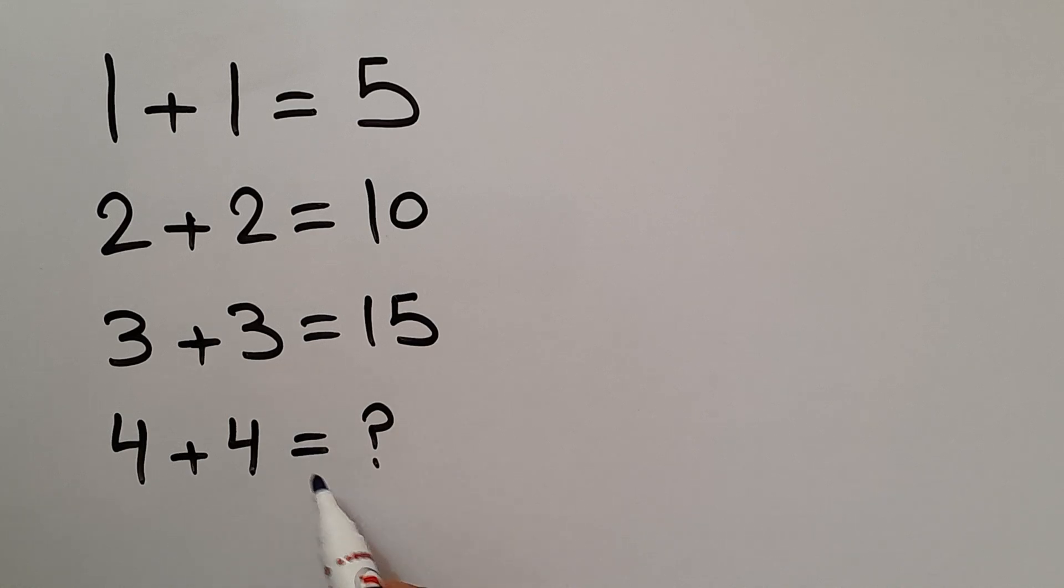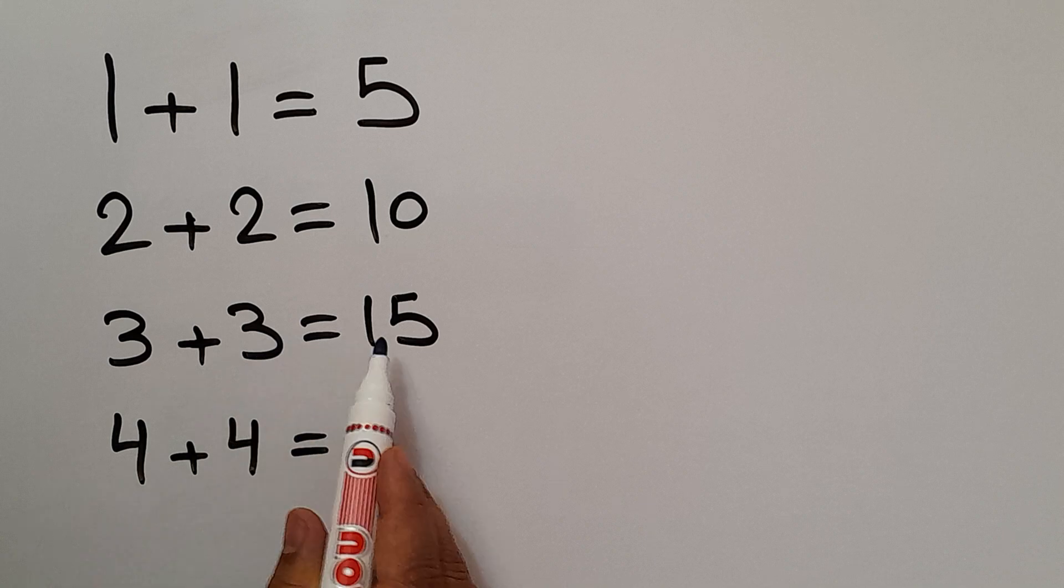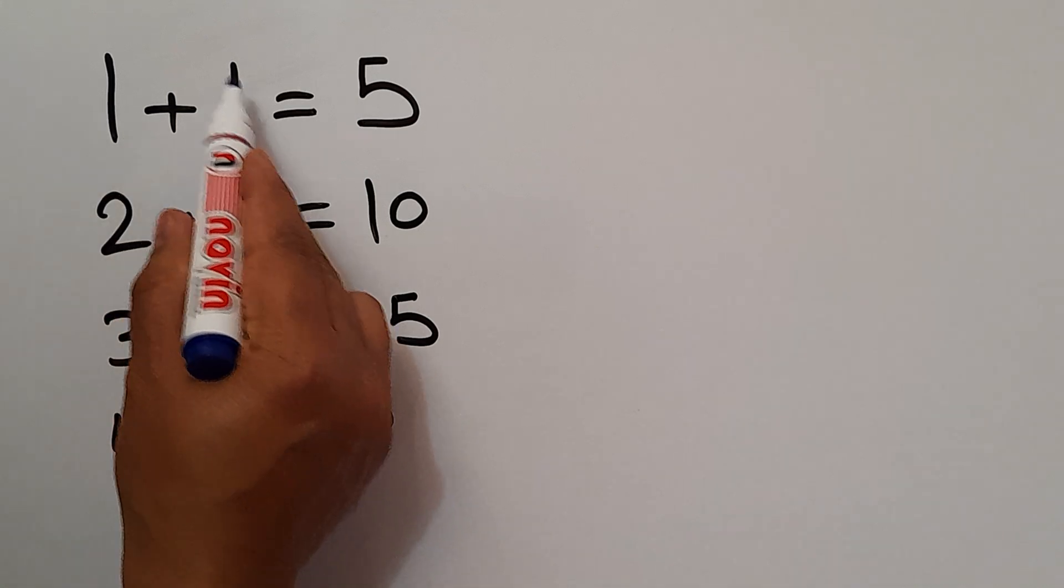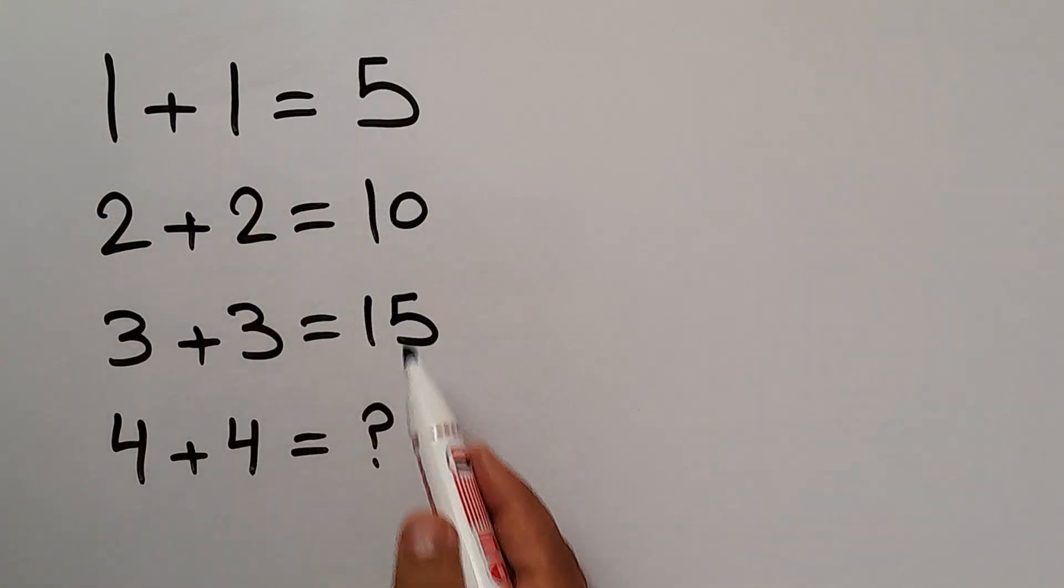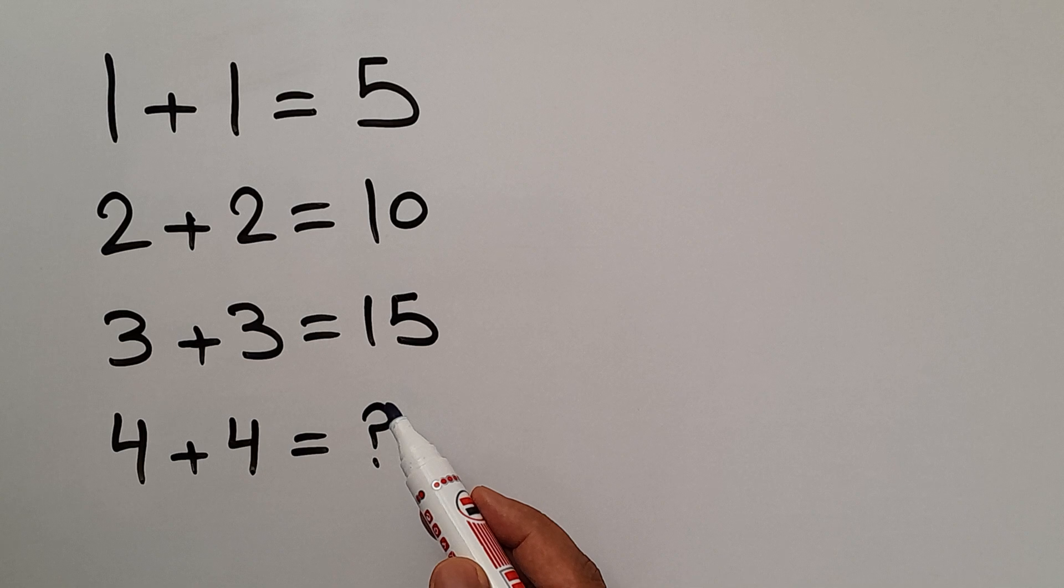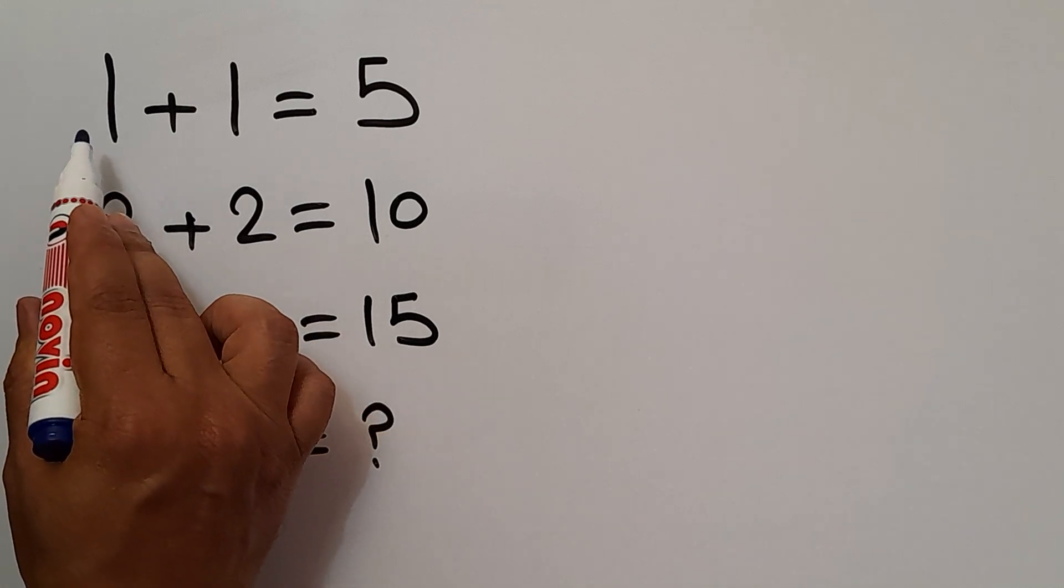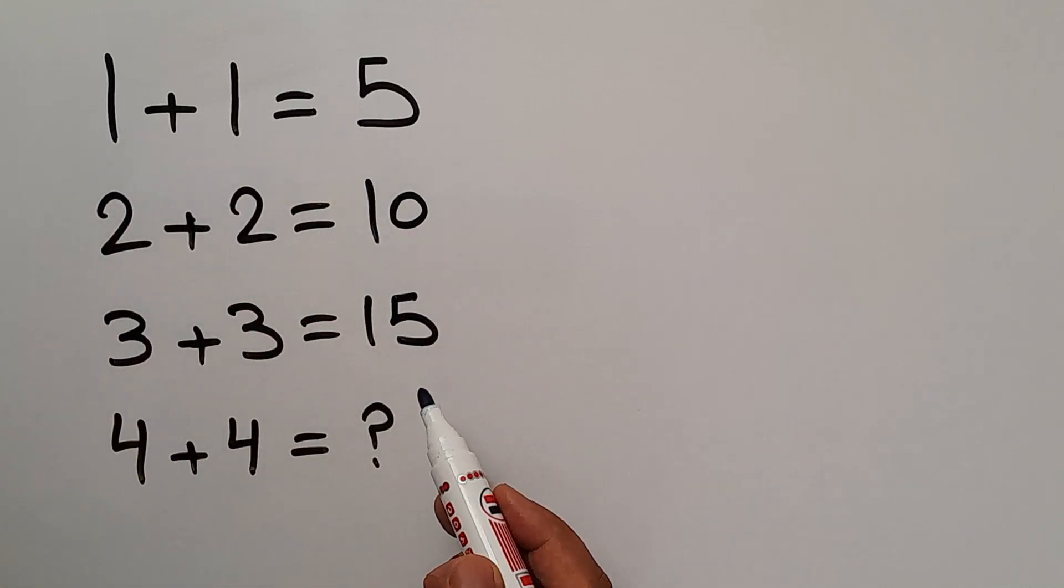Our goal is to find the pattern that exists here and calculate the missing number. Are you ready to solve? Let's go down and get started. In each line, we have three numbers: the left-hand side numbers and the right-hand side number. We need to find the relationship between these three numbers in each row.